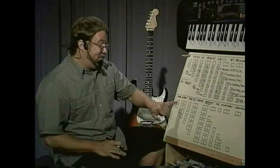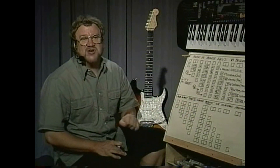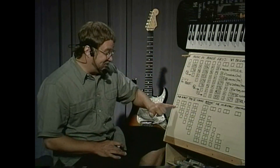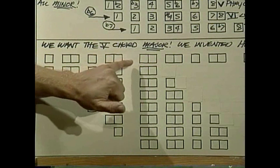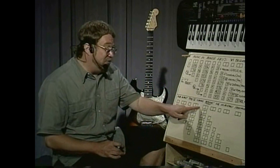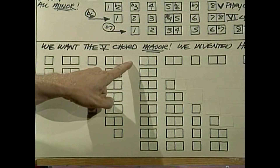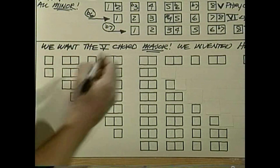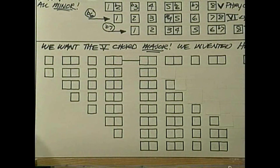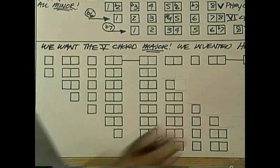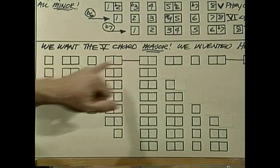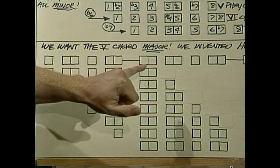We've harmonized a major scale, and we've harmonized a natural minor scale. Now we're going to learn about how to harmonize a harmonic minor scale. Here's a new pattern of intervals. The first thing you notice about it is it's not just made up of whole steps and half steps the way other diatonic scales have been — this scale has one place where you actually skip two notes. This is a step-and-a-half interval right here. This is the harmonic minor scale.